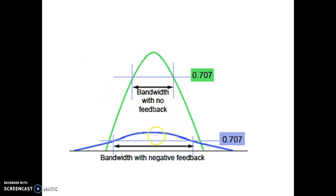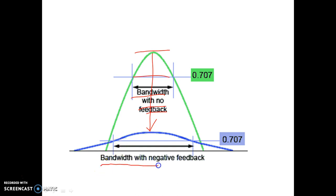We can see this in the graph. This is the bandwidth with no feedback — bandwidth is less but the mid band gain is very high. But due to application of negative feedback, the mid band gain decreases significantly. However, the bandwidth with negative feedback is very much higher compared to the bandwidth without negative feedback. This is the graph showing bandwidth with negative feedback versus bandwidth without negative feedback.